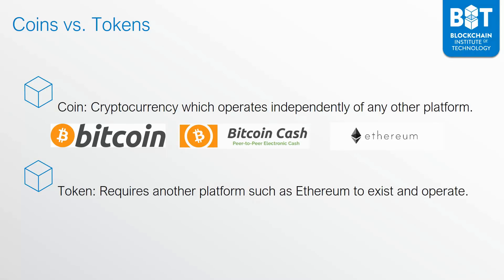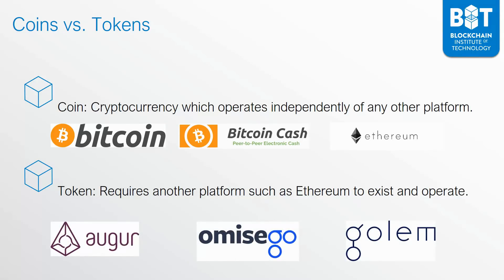A token requires another platform such as Ethereum to exist and operate. Examples of tokens are Augur, Omisego, and Golem. These are tokens that are built on top of Ethereum. Now, there are other platforms that you can build tokens upon, not strictly Ethereum — there's NXT, there's Omni, there's Waves.